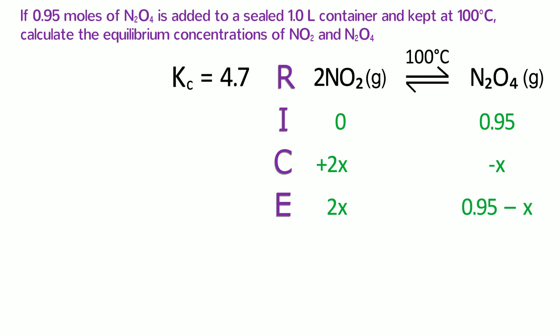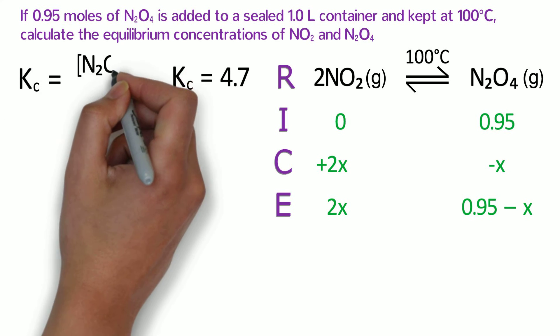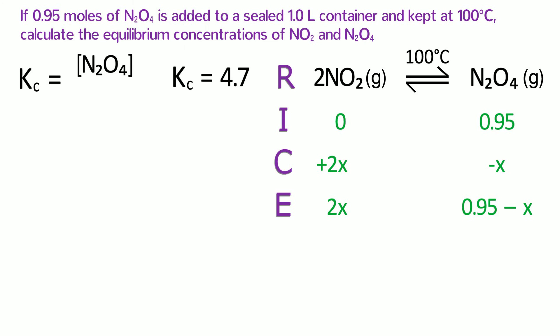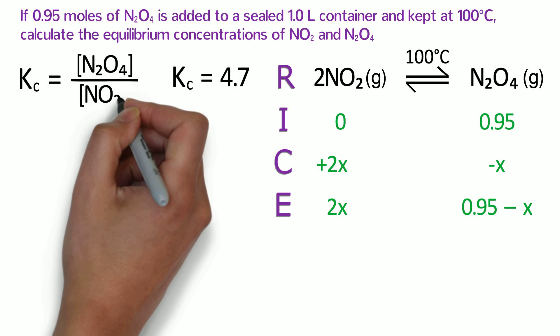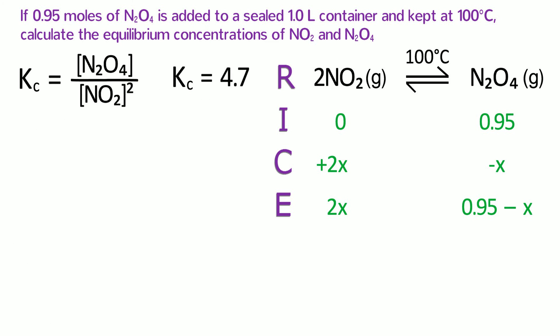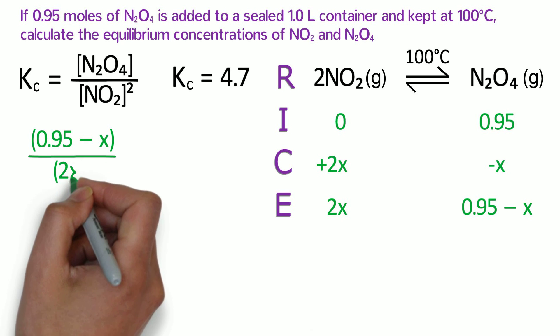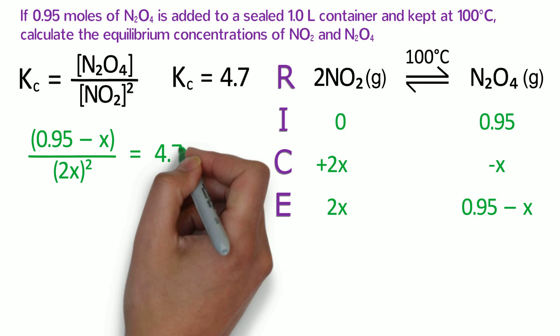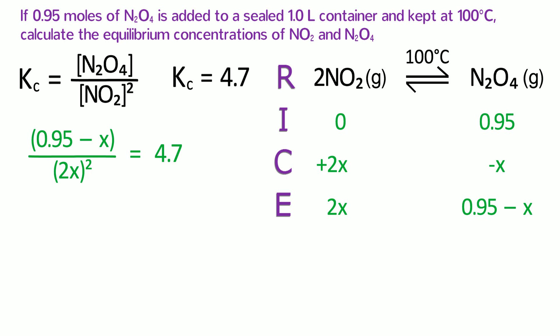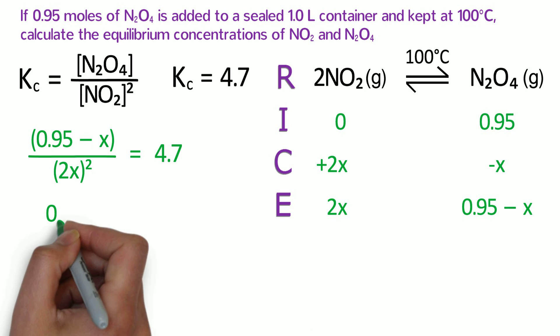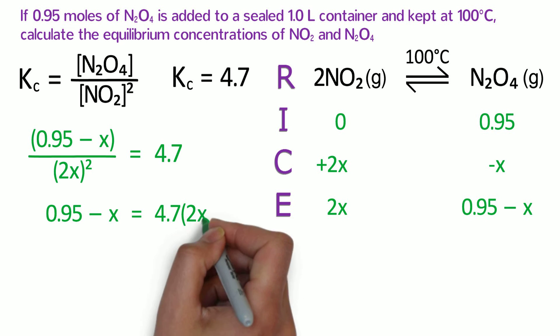Next, let's write out the equilibrium expression. Kc equals the molarity of N2O4 on the top because it is the product, and there is no exponent because N2O4 has no coefficient in the balanced reaction, divided by the molarity of NO2 squared because NO2 has a coefficient of 2 in front of it in the balanced reaction. We already know that the equilibrium constant equals 4.7. Now, we can plug in the equilibrium values and solve for X. Substitution gives us 0.95 minus X divided by 2X squared equals 4.7. We can eliminate the fraction by multiplying both sides by 2X squared, which yields 0.95 minus X equals 4.7 times 2X squared.